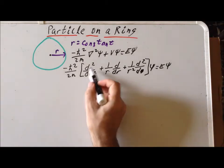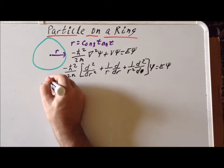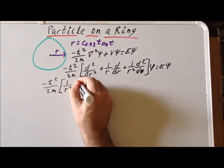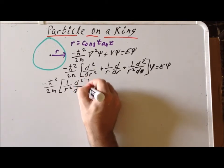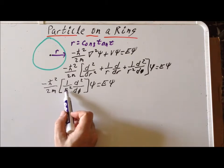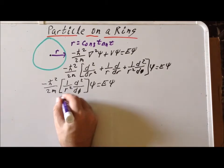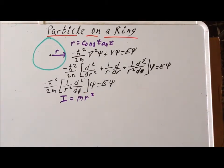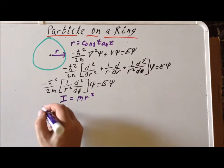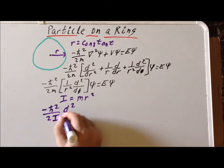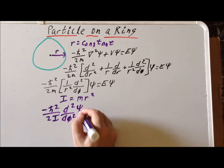So these two terms will drop out and we can more simply write our version of the Schrödinger equation as minus h-bar squared over 2m times 1 over r squared times the second derivative with respect to phi, all acting on psi, equal to E times psi. We notice that in the denominator we have the expression 2m times r squared, and we make the substitution introducing the moment of inertia I, defined to be equal to mr squared. Using that substitution, we can rewrite the Schrödinger equation as minus h-bar squared over 2I times the second derivative with respect to phi of psi, equal to E times psi.